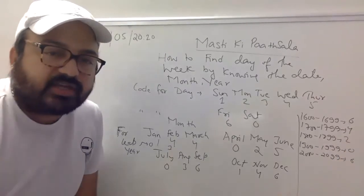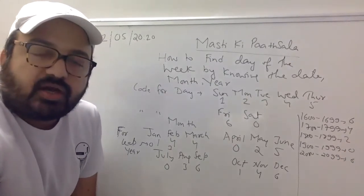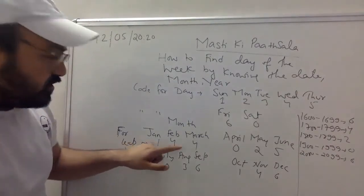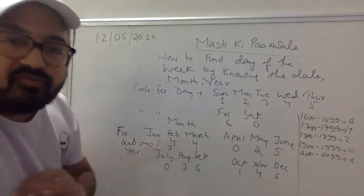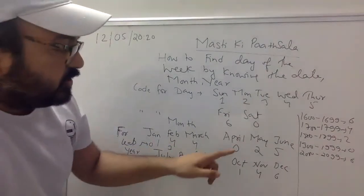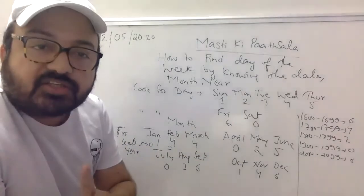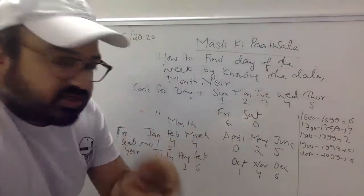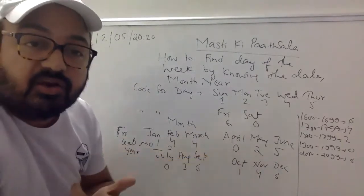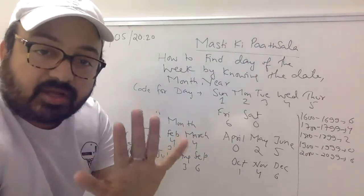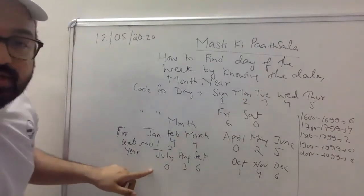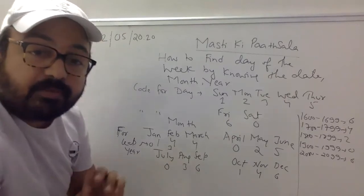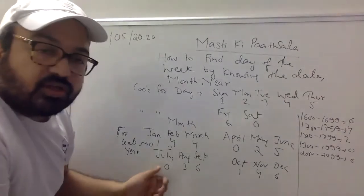महीने का code कैसे याद रखें? 12 का square होता है 144 — January, February, March के लिए 1, 4, 4. April में June: 5 का square 25, लेकिन 2 digit इसने ले लिए, तो May के लिए 0. 6 का square 36 — 3 और 6 इसने August और September ने ले लिए, तो July को 0.